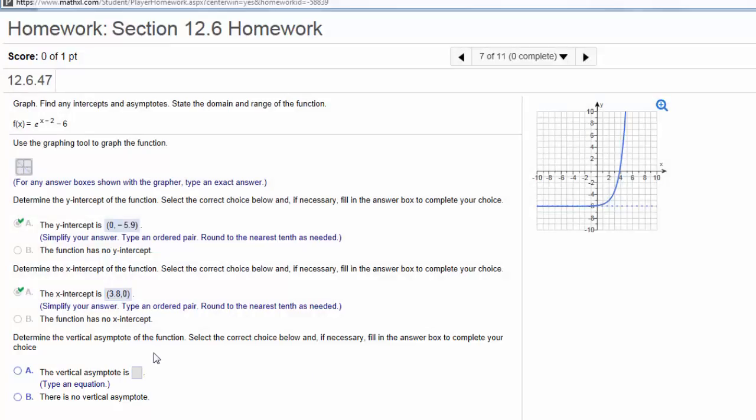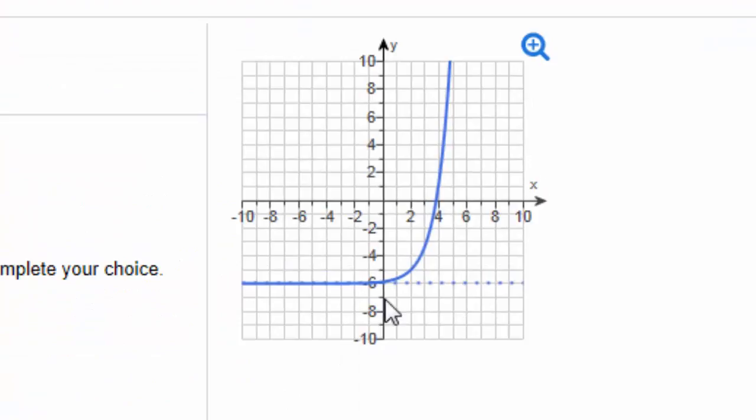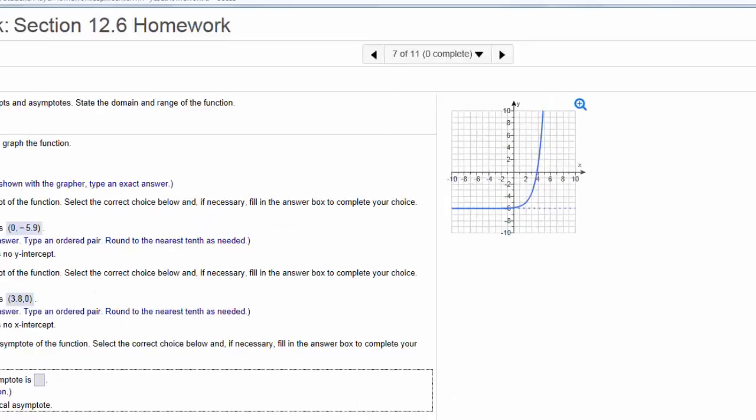Determine the vertical asymptote of the function. So this is an exponential graph that has a horizontal asymptote, not a vertical one. So I select option B. There's no vertical asymptote.